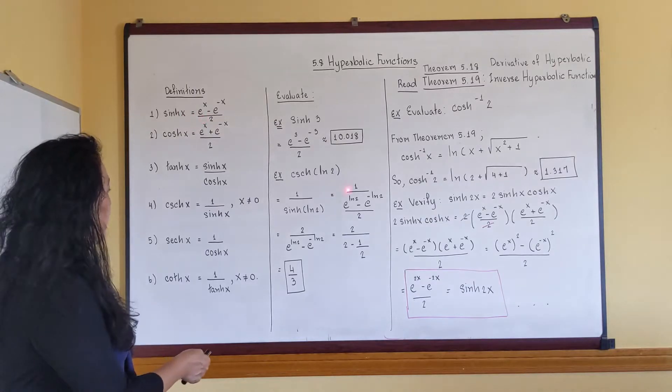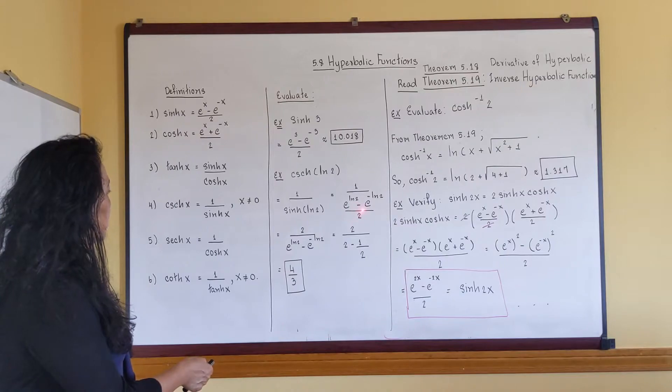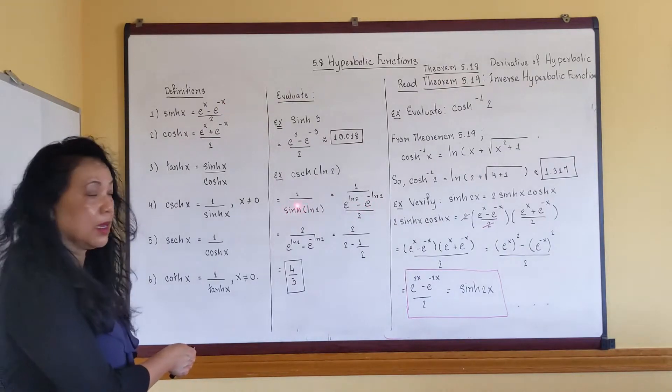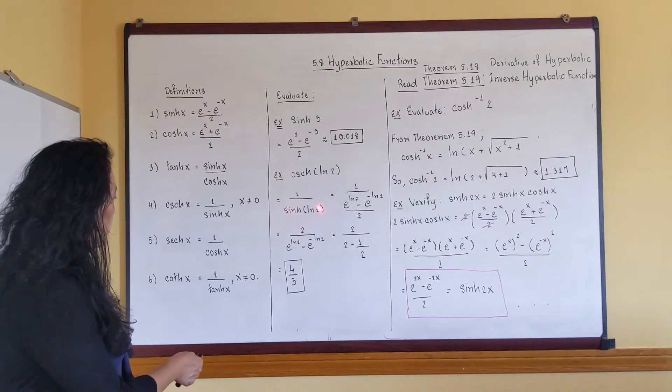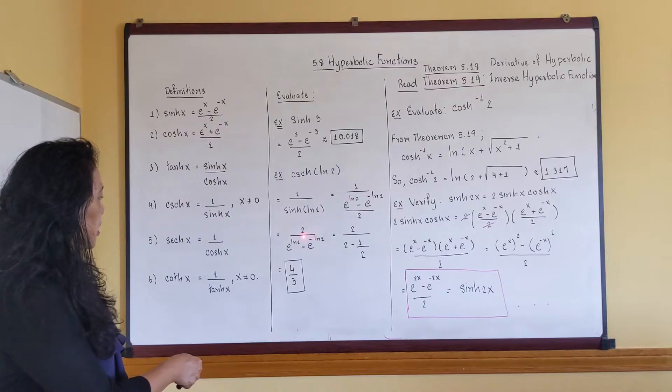So I'm gonna have 1 over e to the ln 2 minus e to the negative ln 2, over 2. Because this is the definition of hyperbolic sine over here. Now my 2 here I bring it up here.